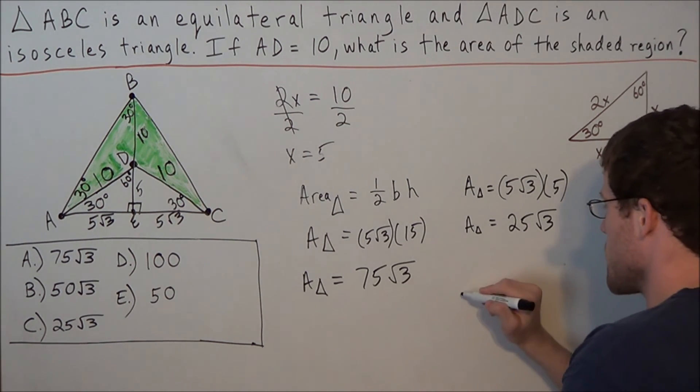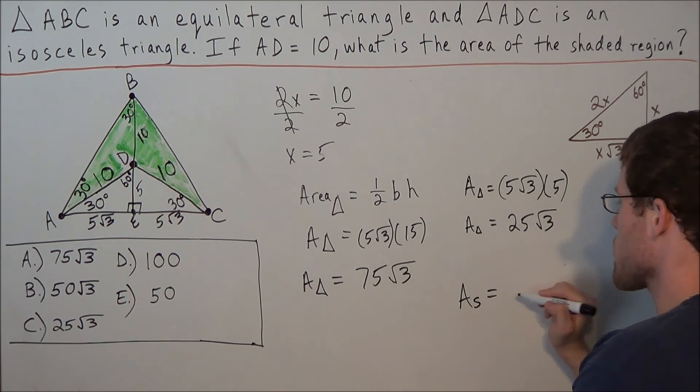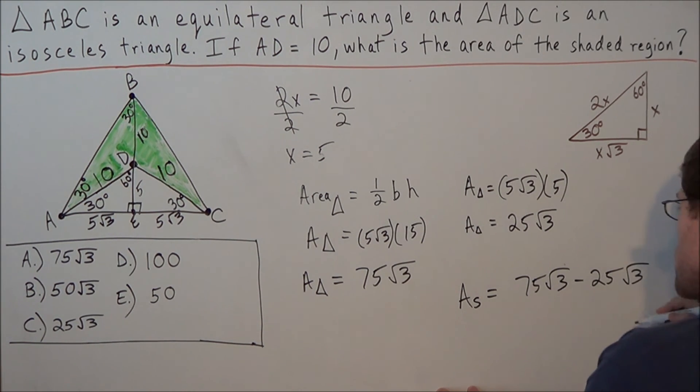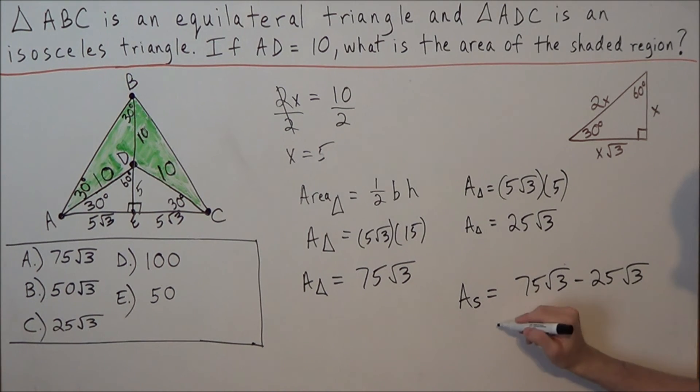So now to find the area of the shaded region, we're going to subtract the area of the big triangle minus the area of the little triangle. So if we have 75 radical 3 minus 25 radical 3,